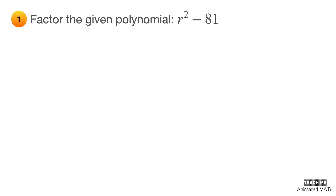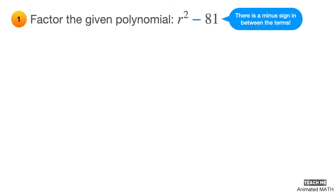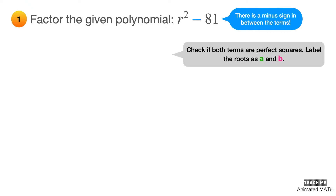Difference of two squares literally means that you are subtracting a perfect square from another perfect square. The first thing you check is the minus sign in between the binomial, because without that minus sign, the principle behind multiplying conjugates cannot be applied. Next, you can identify if a binomial is a difference of two squares by checking if both terms are perfect squares.